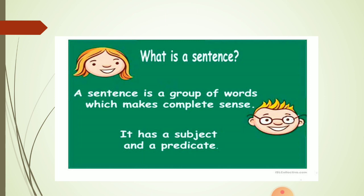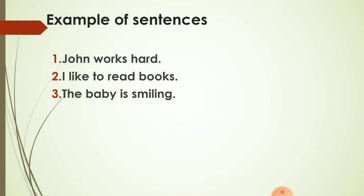What is a sentence? A sentence is a group of words which makes complete sense. A sentence is a group of words that makes complete sense — it has a subject and a predicate. Examples: 'John works hard,' 'I like to read books,' 'The baby is smiling.' These are examples of sentences. Each is a group of words that makes complete sense, and they are combinations of subject and predicate.